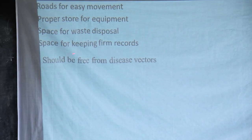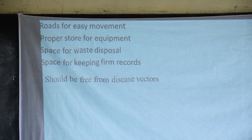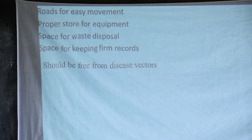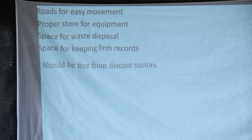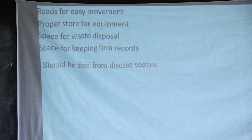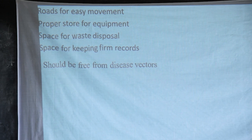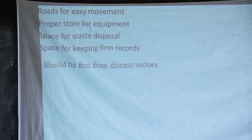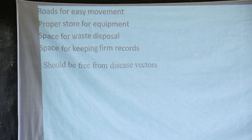A good farm should have a space for keeping farm records so the administration can record activities. If one season didn't go well, you can compare the next season and see where to improve. A good farm should also be free from disease vectors — vectors are living organisms that spread diseases. This can be done by disinfection, spraying insecticides on your farm to kill different vectors.